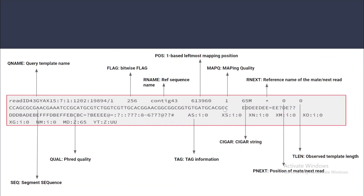The next field is RNAME — the reference sequence name, which tells you which reference your read is mapping to. Next is POS, which tells us the leftmost mapping position of the first base of the read. After that is mapping quality, which tells you how well the read aligns to the reference sequence.